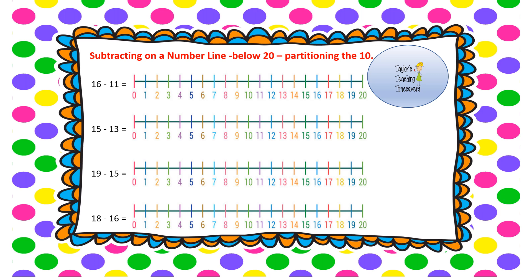We're going to finish by subtracting on the number line with numbers below 20, but partitioning the number — just a fancy word for splitting it up. First question: 16 take away 11. Start on 16. Partition 11 into a 10 and a 1. Rather than doing 11 jumps, jump back 10 first: 16 take away 10 takes me to 6. Now one more jump back gives me 5, so 16 take away 11 equals 5.